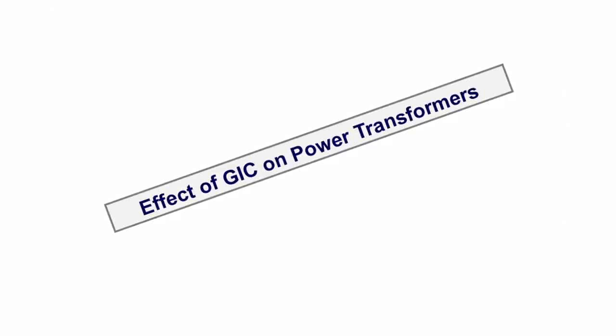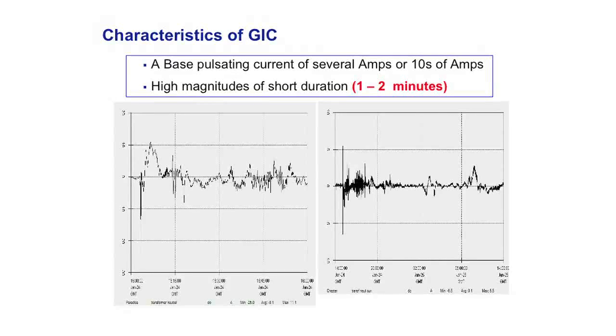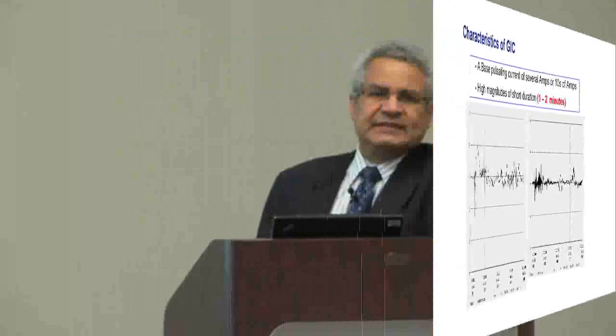These are actual GIC signatures measured this year. The one on the left was measured in South Manitoba in mid-January, and the one on the right in Kentucky in early March. The key point of the GIC signature is that you have a low or medium level of GIC that stays for hours — four, six, or ten hours — with very high peaks of GIC in between that last only one or two minutes.